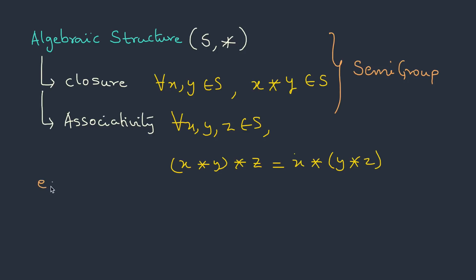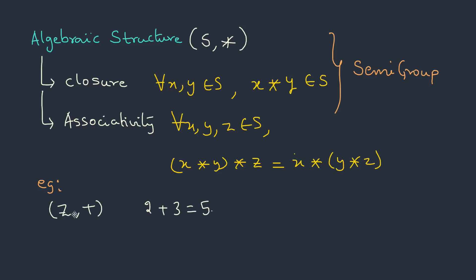For example, the set of integers under addition is a semigroup. We can test it: pick any two elements, say 2 and 3. Both belong to the integers. Performing addition, 2 plus 3 equals 5, and 5 also belongs to the integers. Therefore, it follows the closure property.